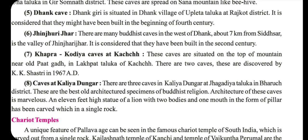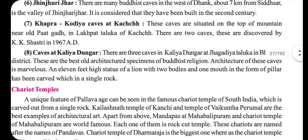The Khaaprakadia caves at Kutch are situated on the top of a mountain near old Patghat. These were discovered by K.K. Shastri in 1967. The caves at Kaliadungar contain three caves, and an 11-feet-high statue of a lion with two bodies but one mouth, carved in a single rock, is found there.